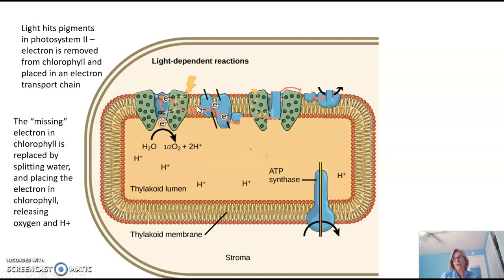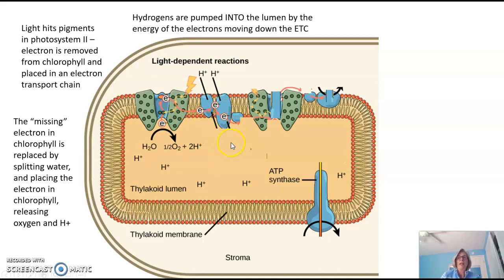This should look very familiar if you have covered cellular respiration — the electron is getting passed from protein complex to protein complex, each of which is more electronegative than the previous. The energy released by passing electrons down the electron transport chain is used to pump hydrogens into the lumen of the thylakoid. This process is very similar to the mitochondria, but the direction of pumping is opposite. In the mitochondria, hydrogens are pumped out of the inner space into the intermembrane space. In the chloroplast, hydrogens are pumped from the stroma into the lumen.